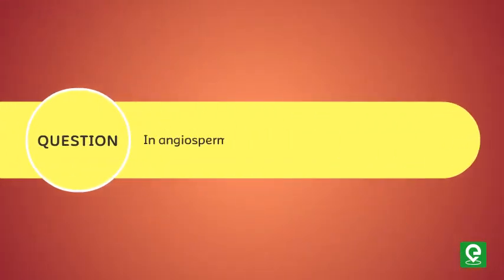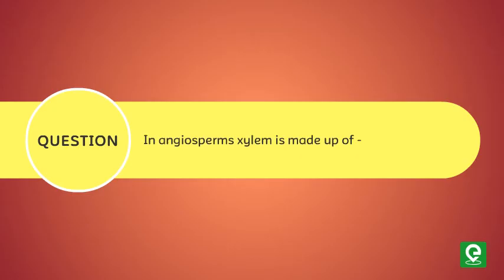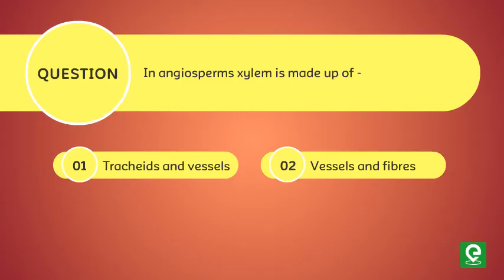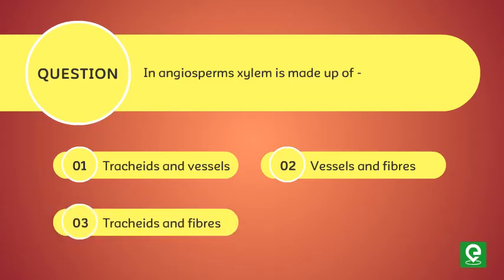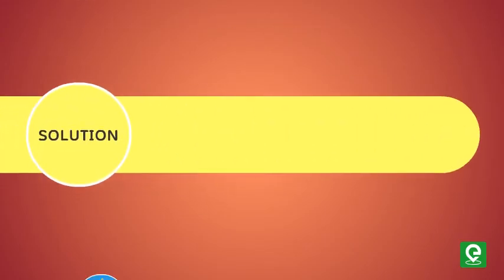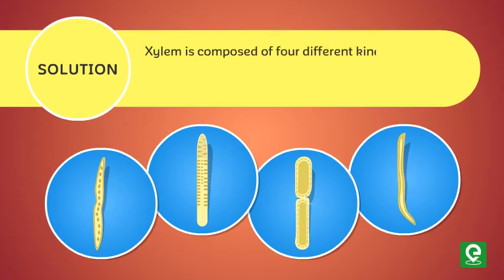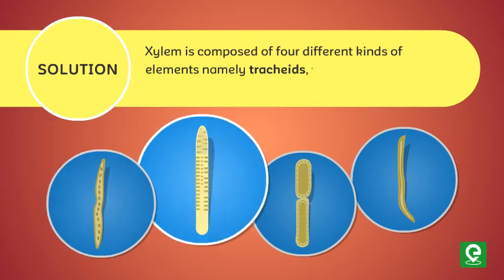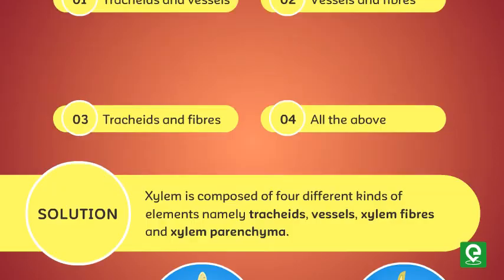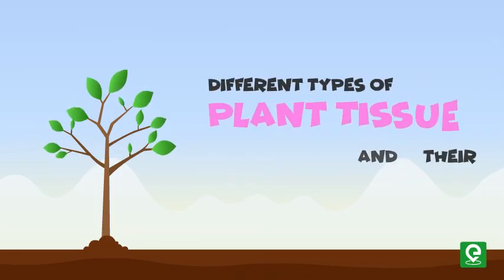Question three: In angiosperms, xylem is made up of — (1) tracheids and vessels, (2) vessels and fibers, (3) tracheids and fibers, or (4) all of the above? This question was asked in CPMT 2010. Solution: Xylem is composed of four different kinds of elements: tracheids, vessels, xylem fibers, and xylem parenchyma. Hence, option four is correct. This video concludes the discussion on different types of plant tissues and their functions.